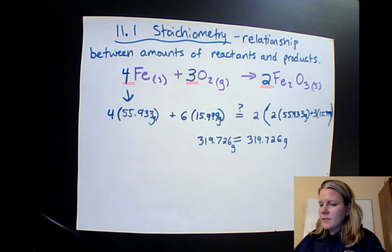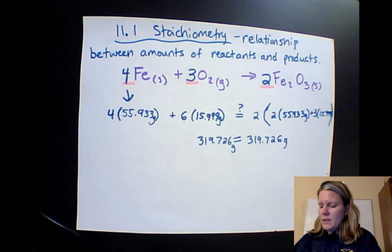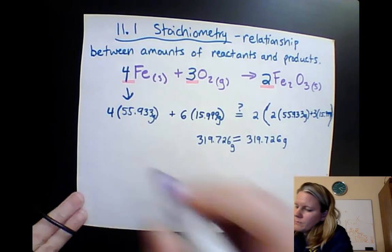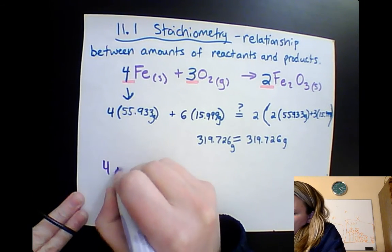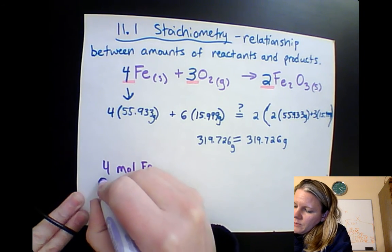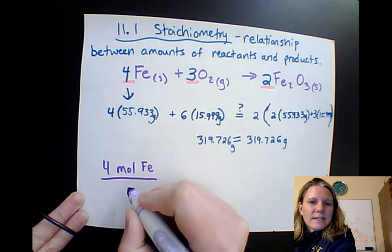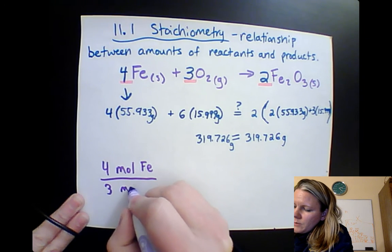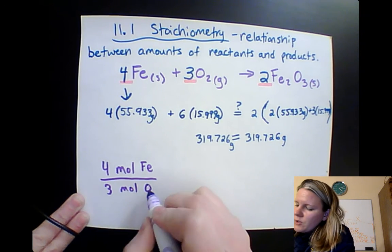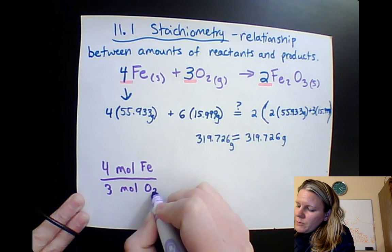So let's do one of these together. And then you'll push pause and try a few more out on your own. We have four moles because these are mole ratios of iron is needed for every three moles of oxygen. And you can also, oxygen should be double there.